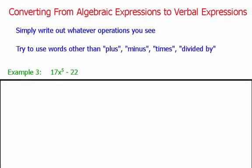Now that you're back, we are going to be talking about going the other way — converting from algebraic expressions to verbal expressions. To do this, all we're going to do is simply write out whatever operations you see. We can see the math operations happening in example number 3; we just need to plug in words. We're going to try to use words other than plus, minus, times, divided by — we want to try to avoid the basic ones. Those are perfectly valid, but now that we're in algebra, we want to try and use a little bit higher-level vocabulary words. Also, the SOL is going to be using those high-level vocabulary words, so you really want to know how to do it.